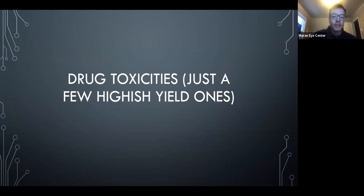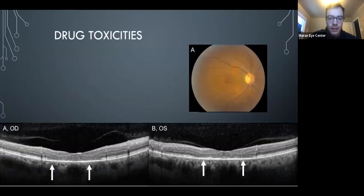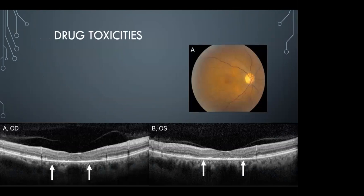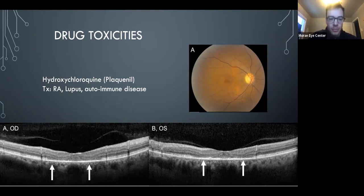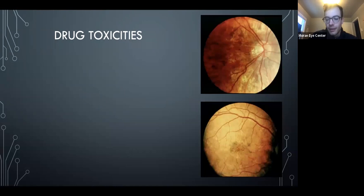Drug toxicities. The one we look for most often is plaquenil — hydroxychloroquine — causing bull's-eye maculopathy. They won't just ask what drug causes this; they'll ask what the patient is being treated for — rheumatoid arthritis, lupus, or various autoimmune diseases. For pigmentary retinopathy, the drug they like to ask about is thioridazine, a phenothiazine used for psychiatric disorders.